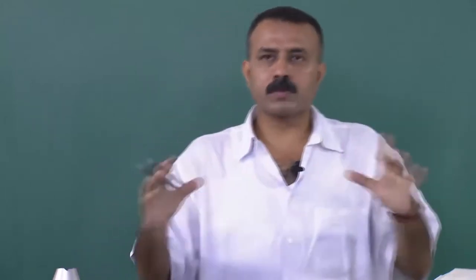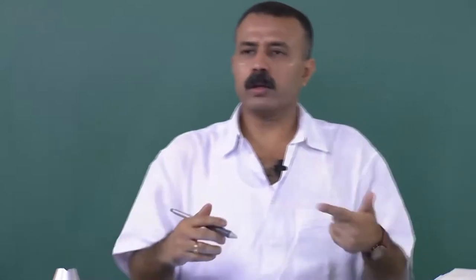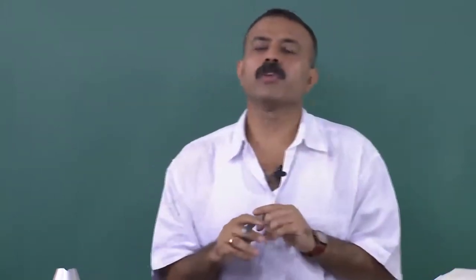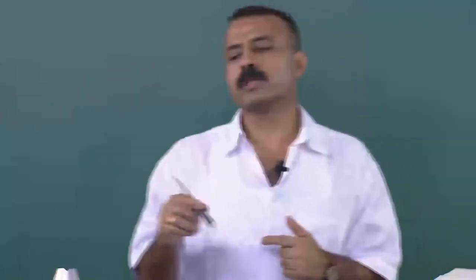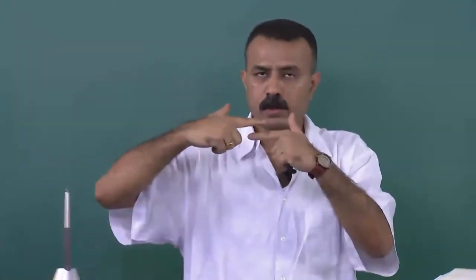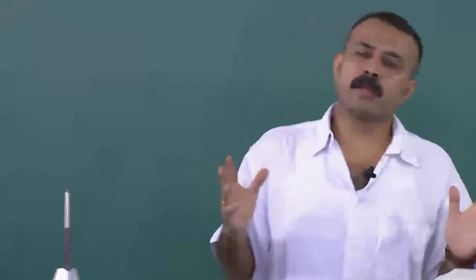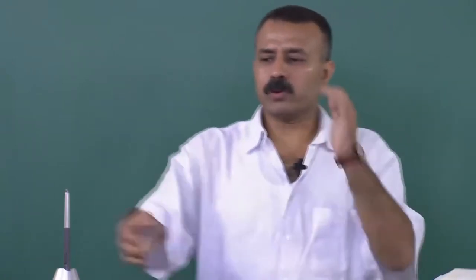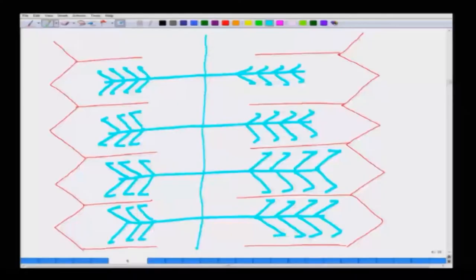This is the smallest unit called a sarcomere. Overall, if you look at this picture carefully, you will see zones where both actin and myosin overlap, zones where there is only myosin, and zones where there is only actin. The zone circled here is only myosin. This zone is only actin. This is the overlap zone of actin and myosin.